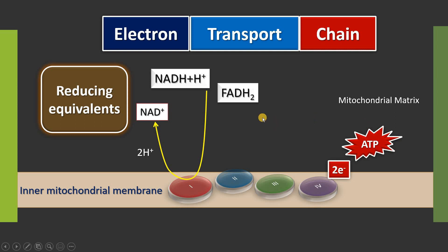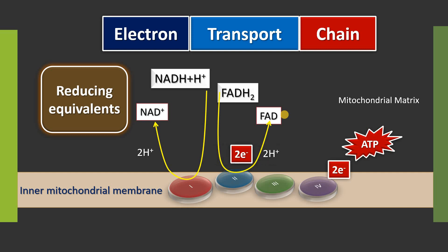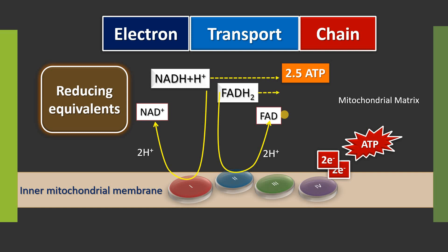Today I am going to emphasize only electron transport chain. Similarly, the high-energy electrons present in FADH2 are also handed over to complex II of the electron transport chain, and the electrons are transferred through different complexes, and finally there is generation of ATP. You need to remember each NADH plus H+, after handing over its electrons to various complexes of the respiratory chain, will give 2.5 ATP. Similarly, each FADH2 will give 1.5 ATP.